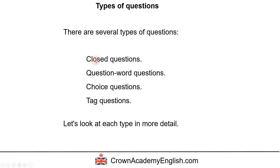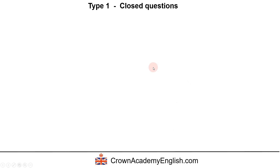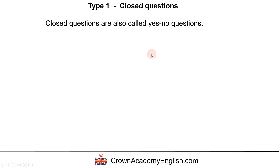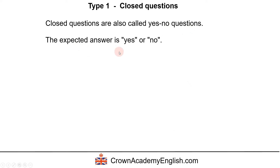Let's start with closed questions. Closed questions are also called yes/no questions. The expected answer is yes or no. That is why we call them closed — because there is a limited number of possible answers; it's either yes or no.